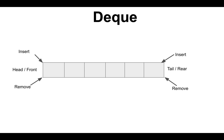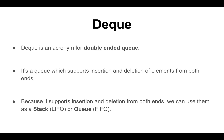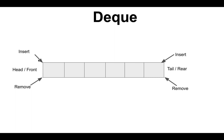or you can insert from the head and also remove elements from that same end, so it acts as a stack. Because it supports insertion and deletion from both ends, we can use Deque as a stack, which is a last-in-first-out data structure, or as a queue, which is a first-in-first-out data structure.